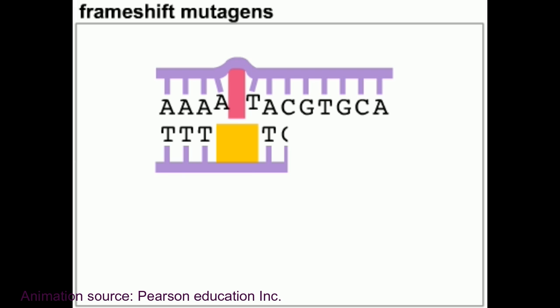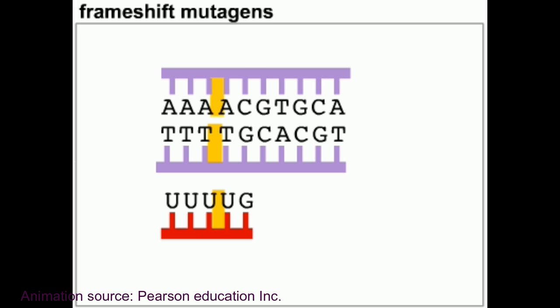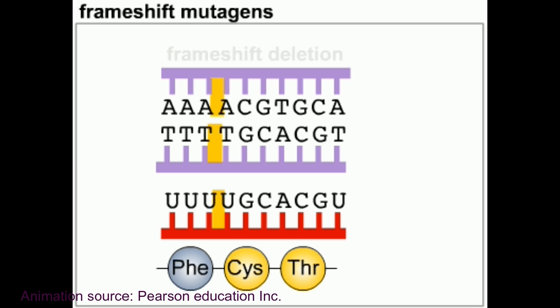These chemicals are the right size and have the right chemical properties to slip between the stacked base pairs of DNA, producing a bulge in the molecule. During DNA replication, this bulge can lead to the insertion or deletion of one or more bases in the newly synthesized DNA.